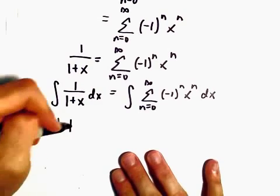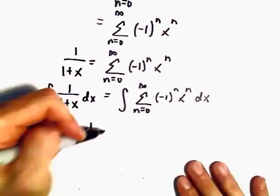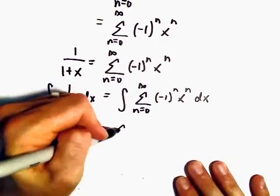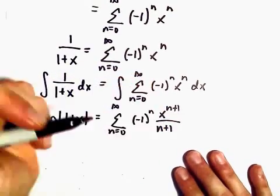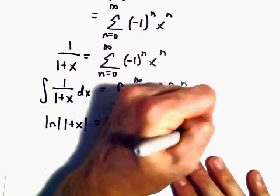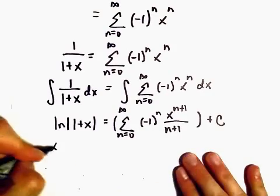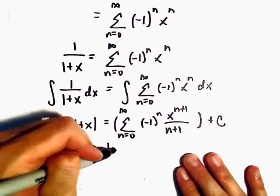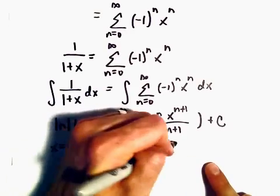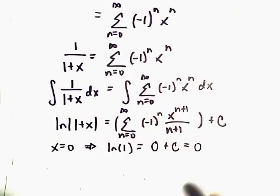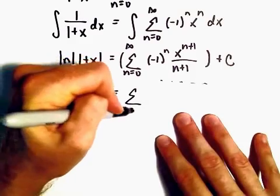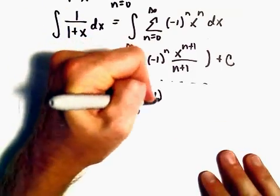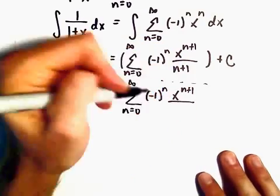We can just do a u-substitution on the left side, and we'll be left with the natural logarithm of (1 plus x). On the right side, when we integrate, we'll have n equals 0 to infinity of negative 1 to the n times x to the n plus 1 over n plus 1. Again we need a plus C, but just like before, if we let x equal 0 we get the natural logarithm of 1 on the left and our series turns into zeros, so C equals 0. Therefore the natural logarithm of (1 plus x) equals the series n equals 0 to infinity of negative 1 to the n times x to the n plus 1 over n plus 1.